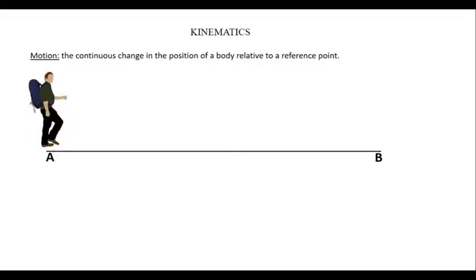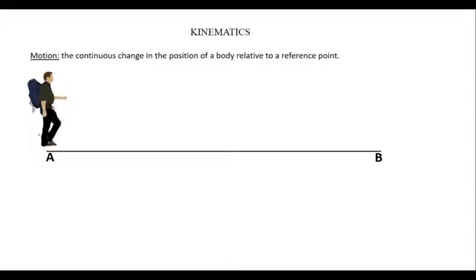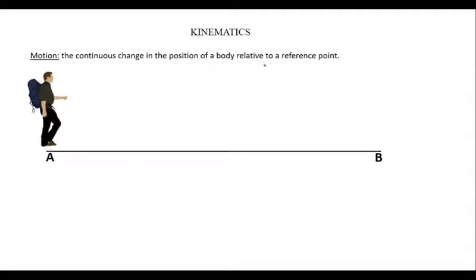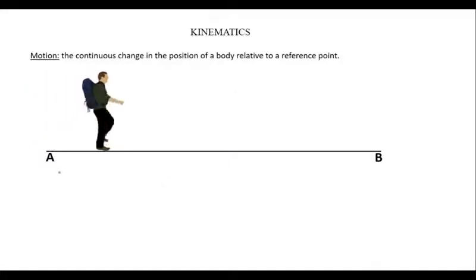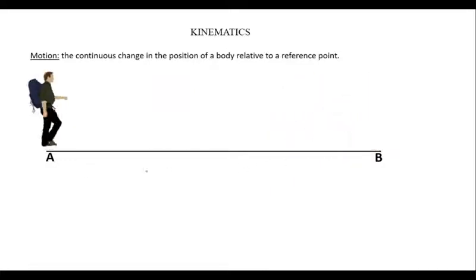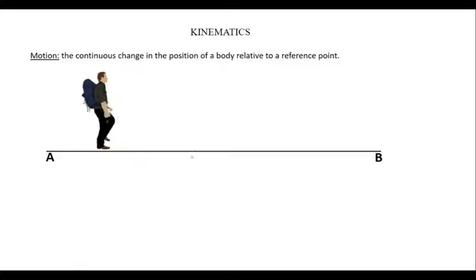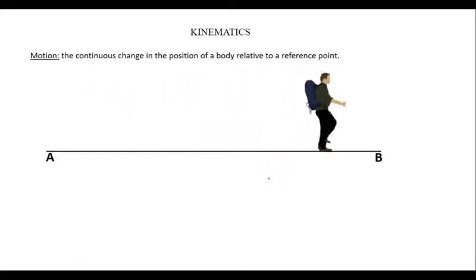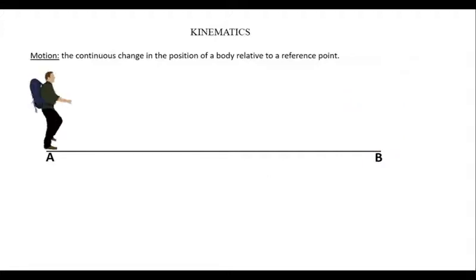A motion is the continuous change in the position of a body relative to a reference point. We have this gentleman standing at position A. He is not in motion until he moves from position A to position B, which is the reference point we are talking about in the definition. As he moved from point A to point B, he is undergoing motion.